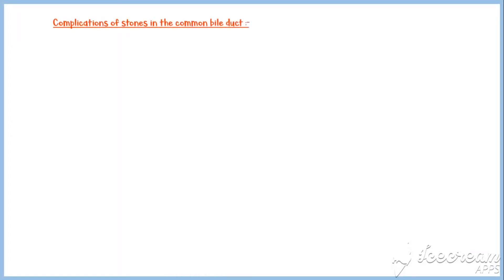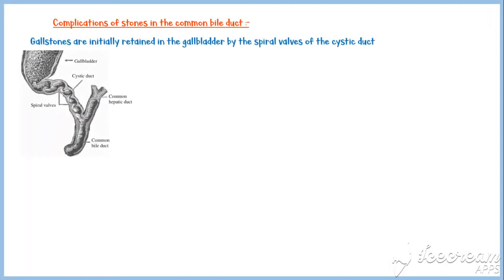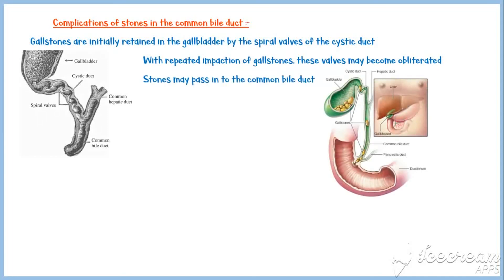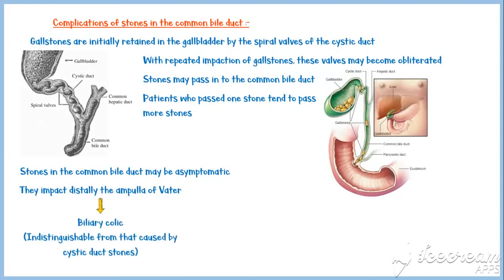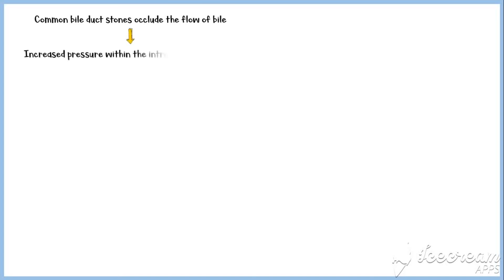Gallstones lodged in the common bile duct may also cause certain complications. Gallstones are initially retained in the gallbladder by the spiral valves of the cystic duct. With repeated impaction, these valves may become obliterated and stones may pass into the common bile duct. Patients who pass one stone tend to pass more over subsequent months. Stones in the common bile duct may be asymptomatic, but more commonly they impact distally at the ampulla of Vater, producing biliary colic. Because common bile duct stones occlude the flow of bile, increased pressure within the intrahepatic bile ducts leads to elevated liver enzyme levels and jaundice.